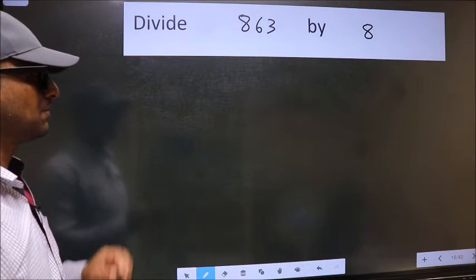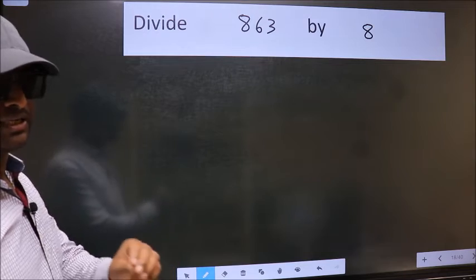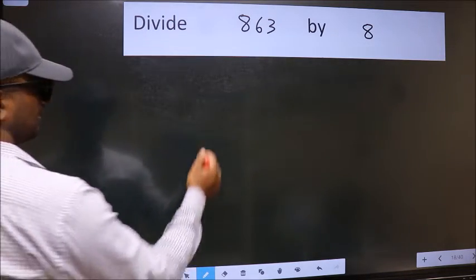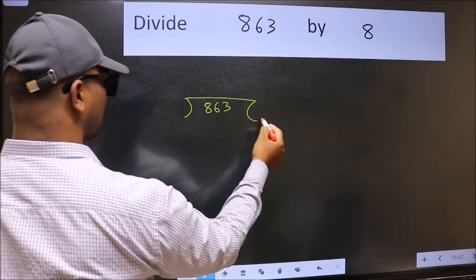Divide 863 by 8. To do this division, we should frame it in this way. 863 here and 8 here.